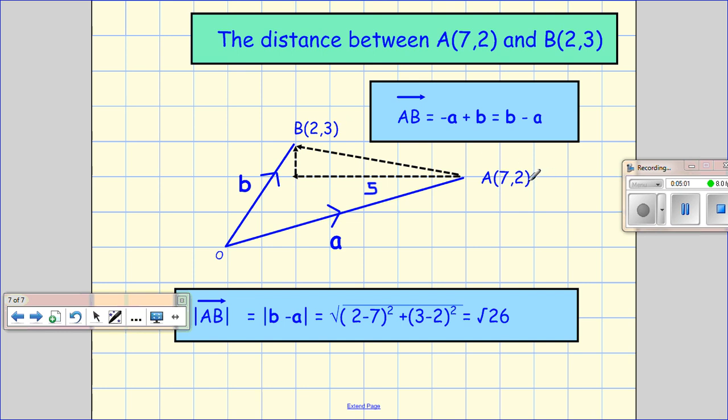And the Y components are 3 and 2, so the difference of those is 1. And so I can do 5 squared plus 1 squared is 26, and therefore I take the square root.